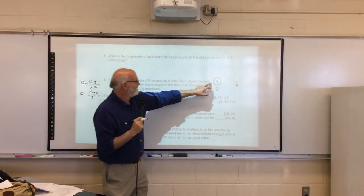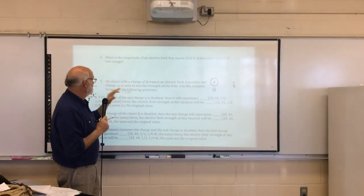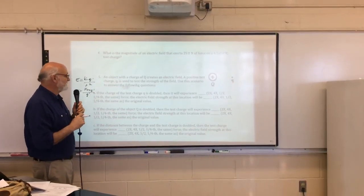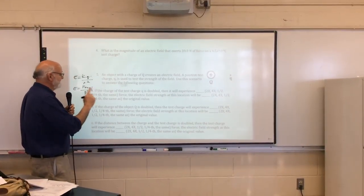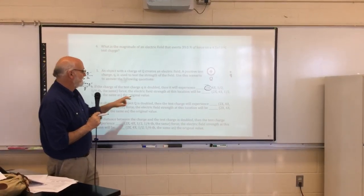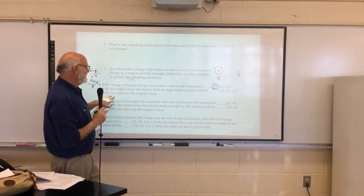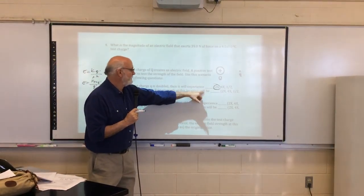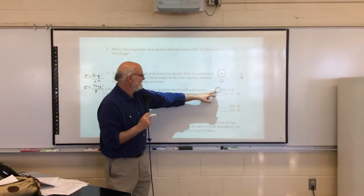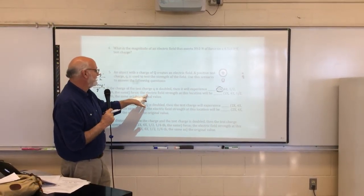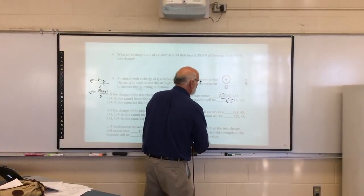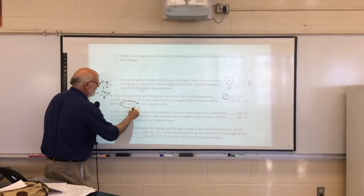Object charge of Q creates an electric field. Positive test charge Q is used to test the strength. Use the scenario to answer the following questions. If the charge of the test is doubled, so you're saying the test charge is doubled. Well, if it's doubled, I take a look here, you double it, then you're going to double that guy. Then it says, the electric field strength at this location. If you go, so if the test charge is doubled, then it'll experience that force. The electric field strength at this location, so you realize this guy's going to be doubled because we've got that, and the electric field strength at this location will also be doubled. Oh, I take it back. I'm lying. I'm lying sack of poo. Sorry, sorry, sorry.